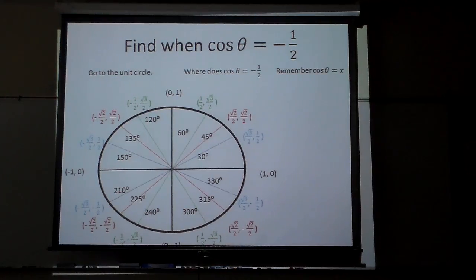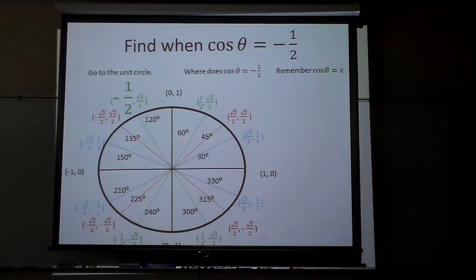Now remember, cosine is x, so where's the x value negative one-half? As I'm going around, here's one at 120. There we go. So we see it right there.